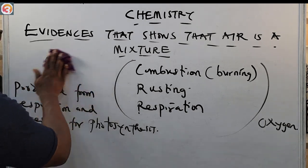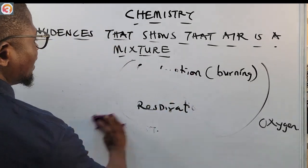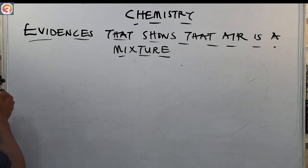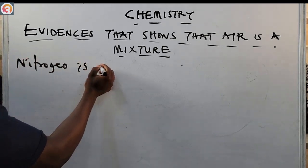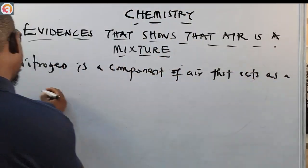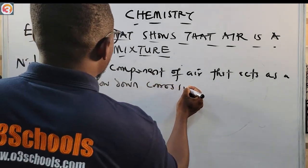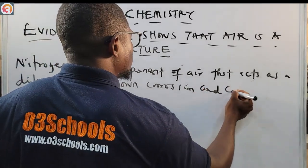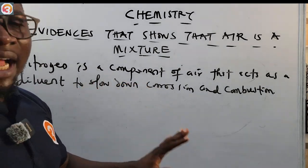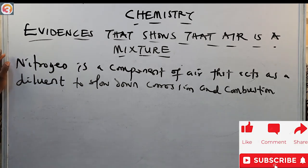Nitrogen is a component of air that acts as a diluent to slow down corrosion and combustion. It is inactive and slows down these processes. We talked about nitrogen in the previous episode — it acts as a diluent to slow down corrosion and combustion.